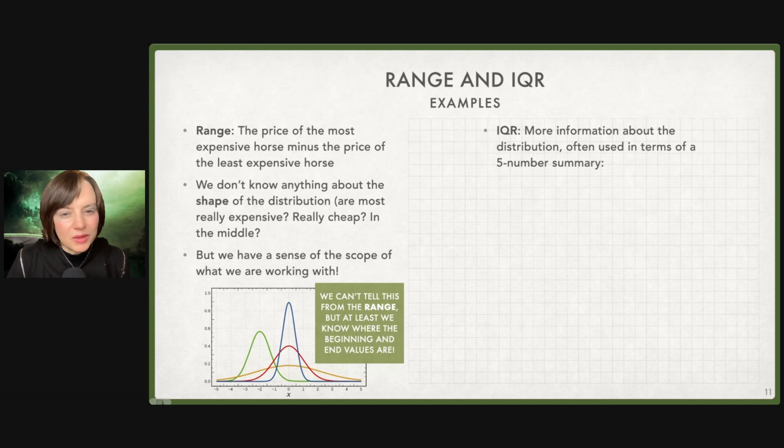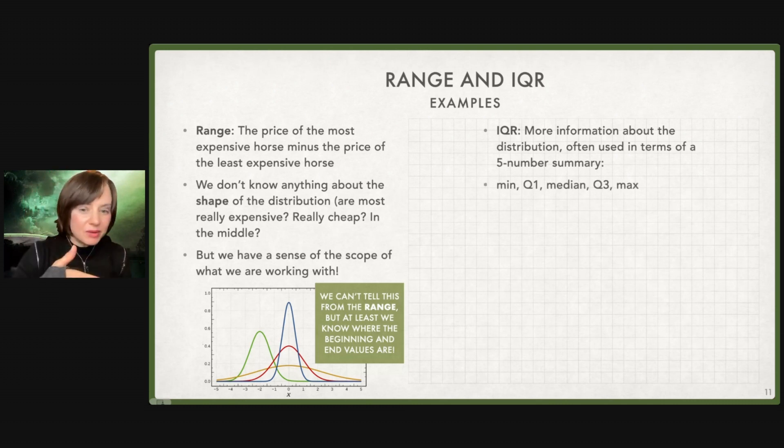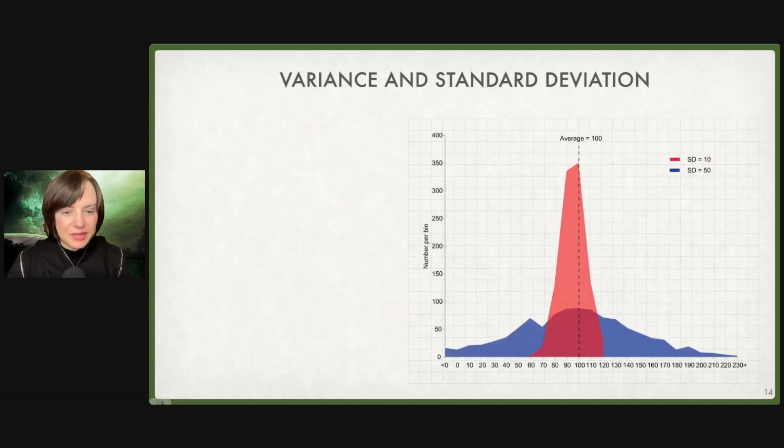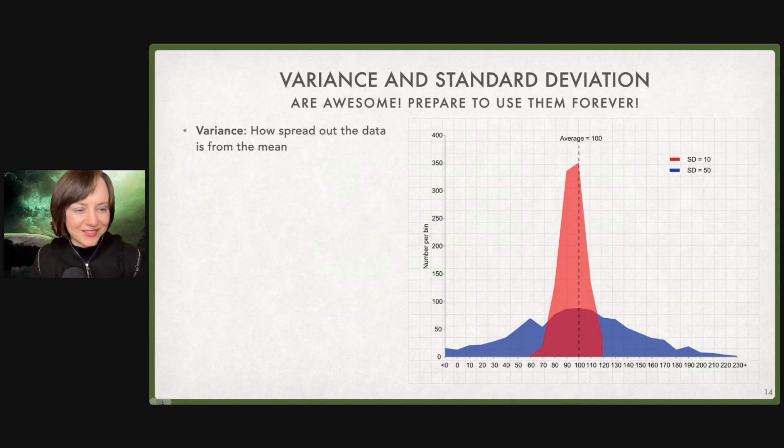If I were more clever, there'd be a home on the range joke, but there isn't. The IQR is a little bit more information about the distribution. Normally, we're going to talk about it in a five number summary. We'll have the minimum, the Q1, the median, the Q3, and the max. There's some code in Python that we'll get to in a bit around how to find some of these things.